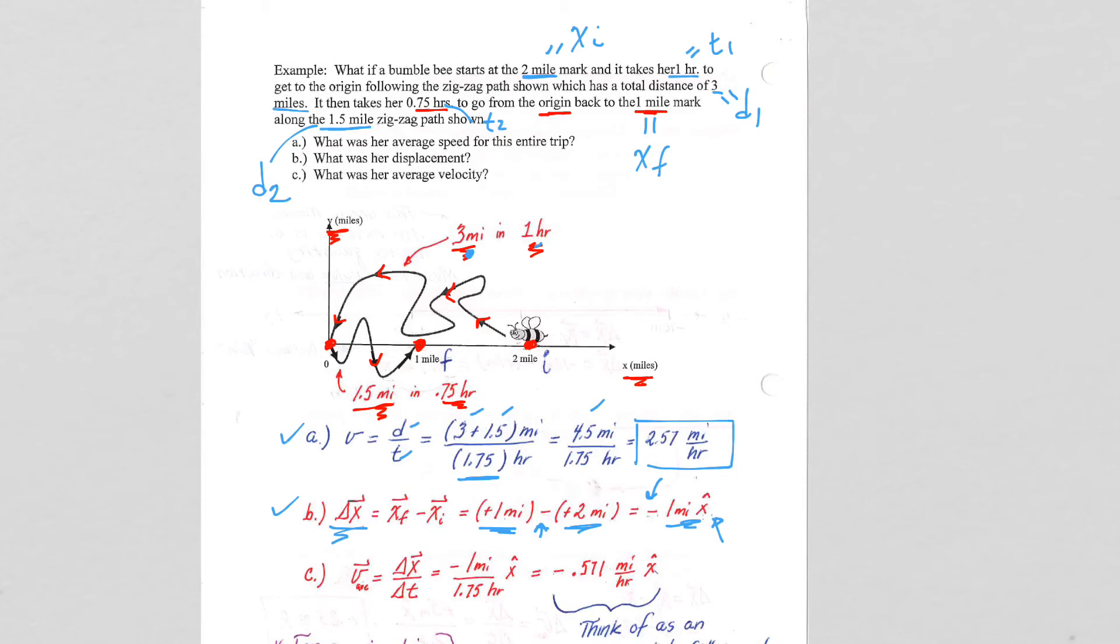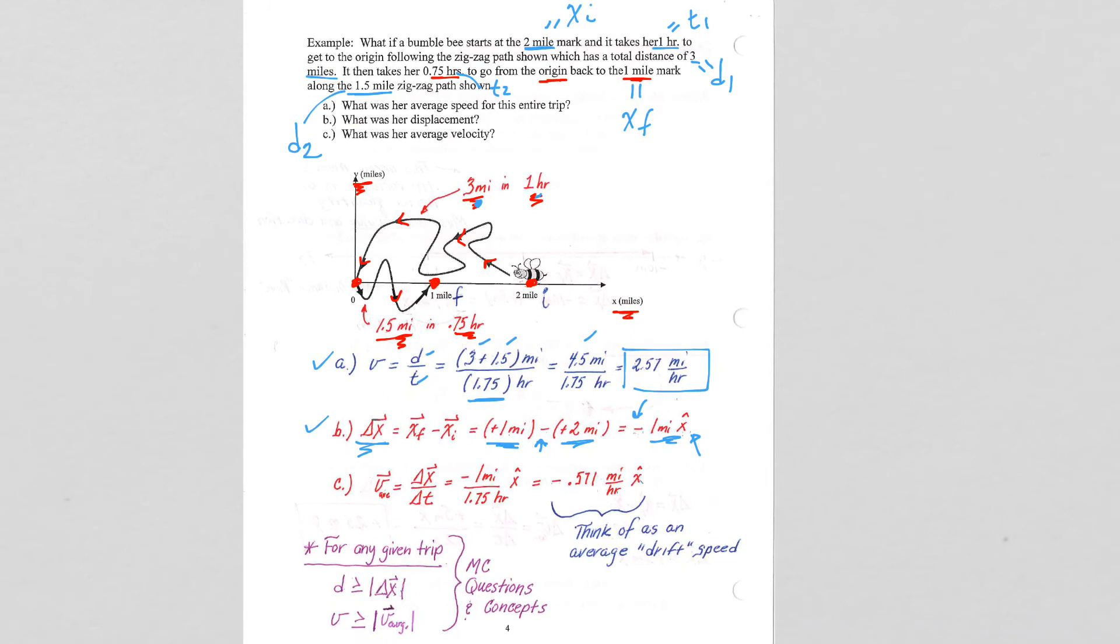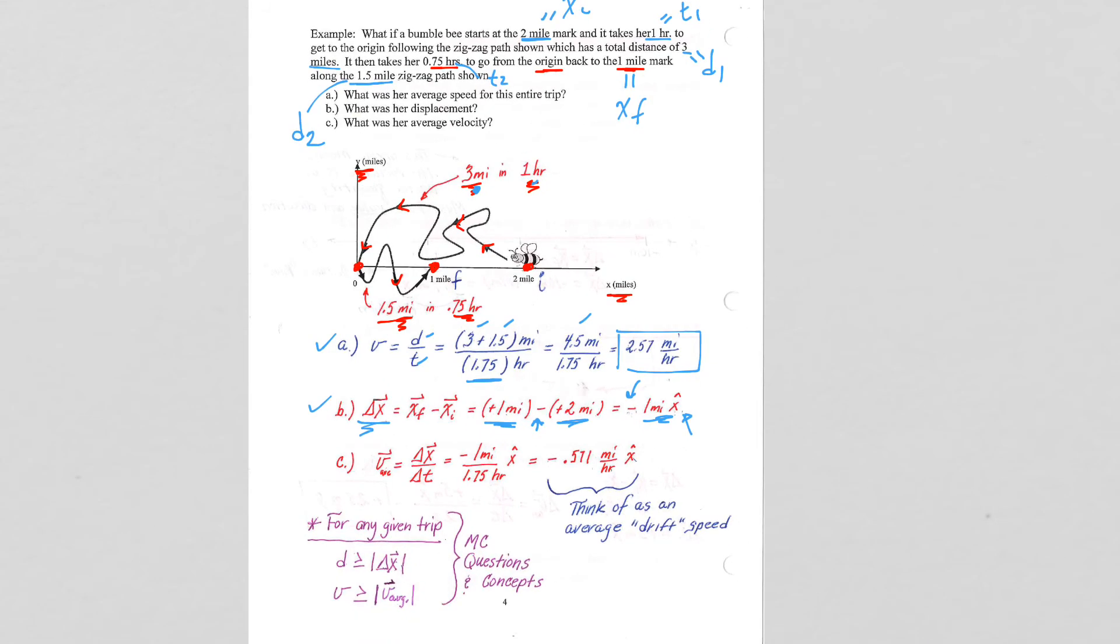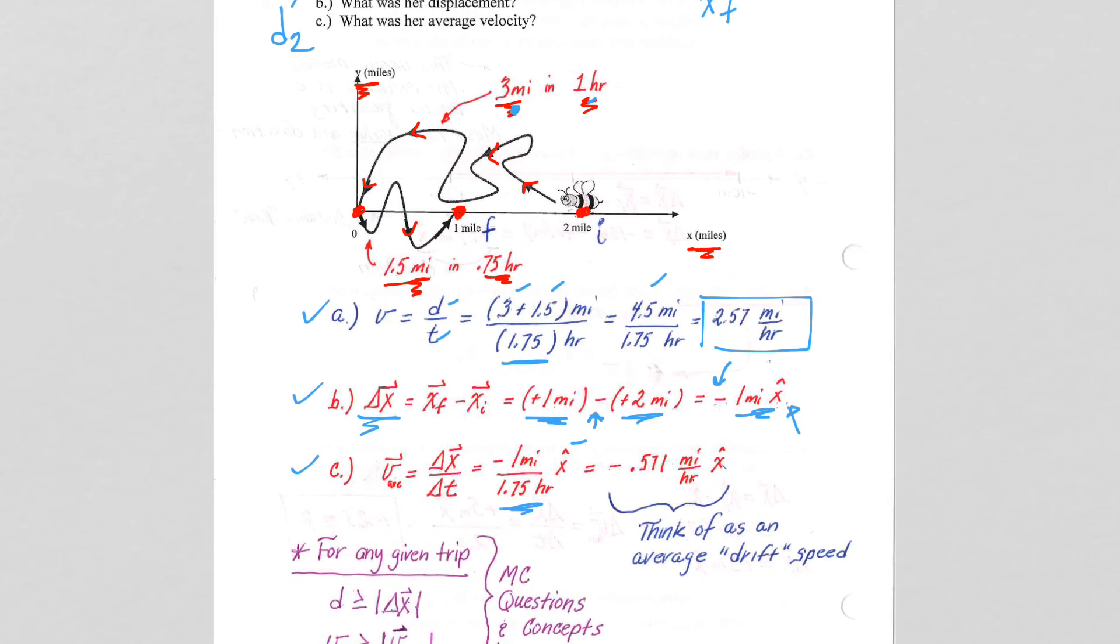We then have the average velocity delta x over delta t. So we take our delta x that we just calculated, divide it by the delta t, the total time that it took, the 1.75 hours. And we got negative, so backwards, 0.571 miles per hour in the x direction.